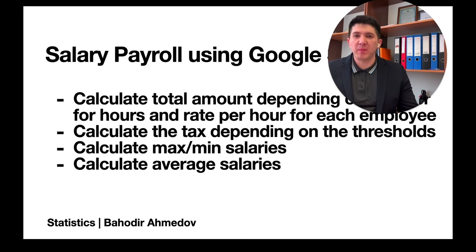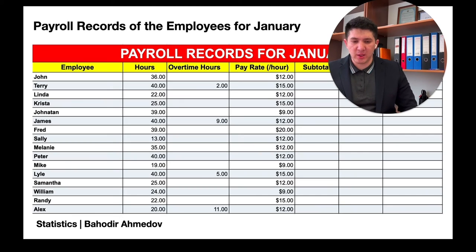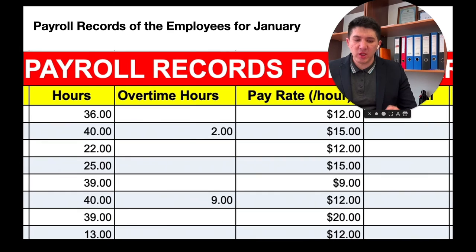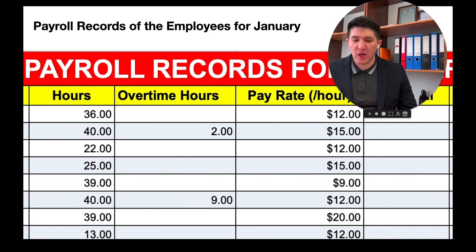Before we proceed to Google Sheets directly, let's consider all of these things theoretically. Here is the payroll required for January for all employees. You can see the employees and for each employee we have columns: the total number of hours worked per month, the overtime hours, and the pay rate per hour.